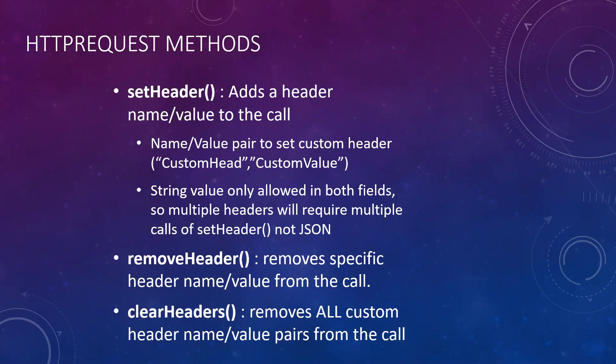Next up is remove header, which will remove a specific header name-value pair from the call. For instance, if we wanted to remove custom head one, we just do remove header, custom head one, and that removes custom head one and custom value one from the call. Then finally, if inside your conditionals you decide you don't want any custom headers for that call, there is the clear headers option, which will remove all custom header name-value pairs you have set up.